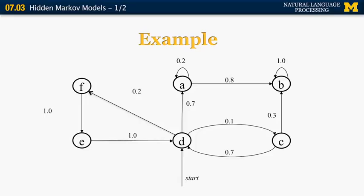If we are in state A, we can go back to A with a probability of 0.2, or go to state B with a probability of 0.8. You can do the same for the remaining four states. One thing that is obvious here is that given any particular state, the sum of the probabilities of all the outgoing transitions is equal to 1, ensuring they form a valid probability distribution.